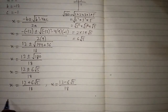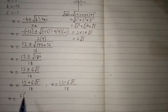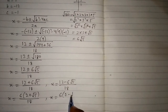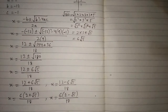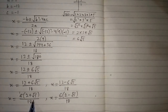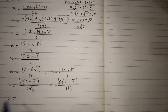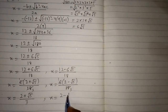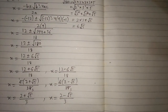We can take 6 common, so we have 2 plus under root 5 in the bracket over 18, and 2 minus under root 5 in the bracket over 18. Since 6 and 18 simplify, 6 over 18 reduces to 1 over 3. So the first value of x is 2 plus under root 5 over 3, and the second value of x is 2 minus under root 5 over 3. These are the solutions of the given quadratic equation.